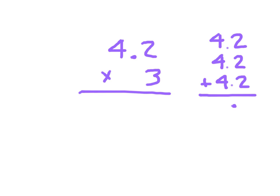We know how to add these. 2 plus 2 plus 2 is 6. 4 plus 4 plus 4: that's 4 ones, 4 ones, and 4 ones, which is 12. And here this was 3 times 2 tenths. 3 times 2 tenths is 6 tenths. So adding those 3 together, we do get 12 and 6 tenths.